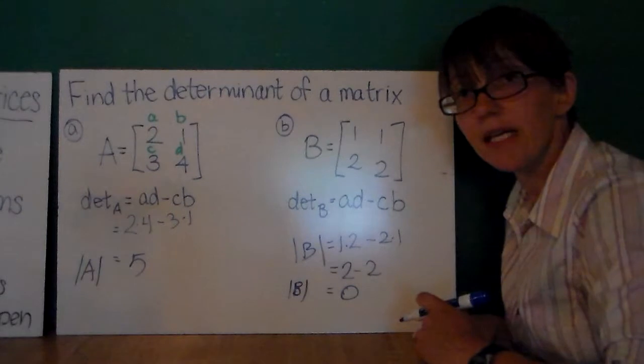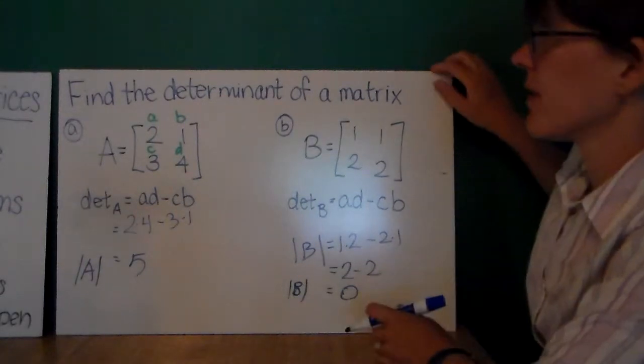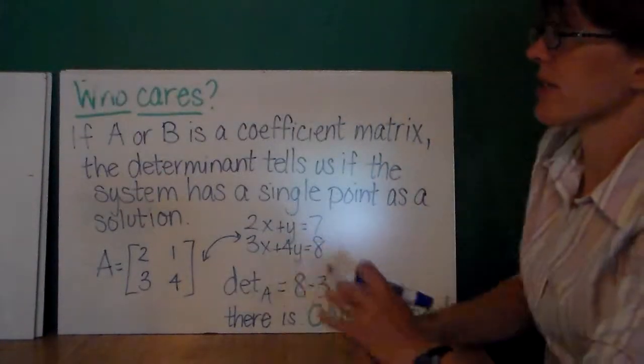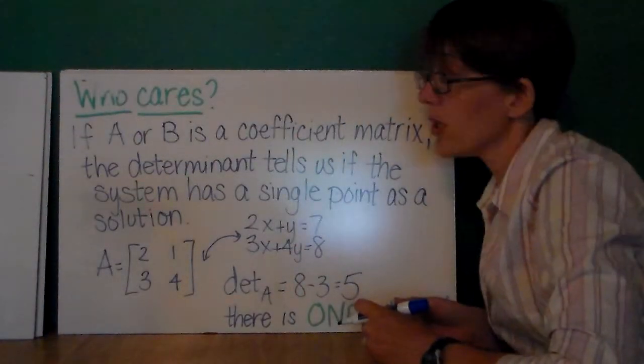The determinant of matrix A is 5. So, pretty easy to calculate the determinant of a 2 by 2 matrix.